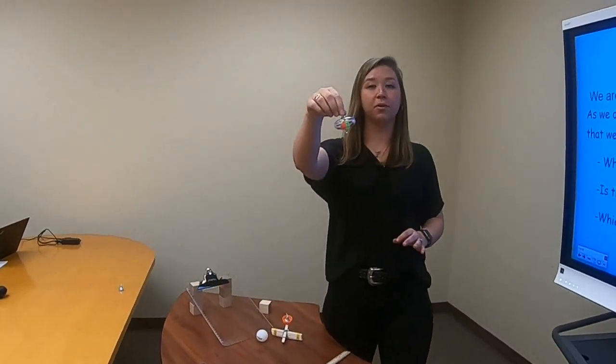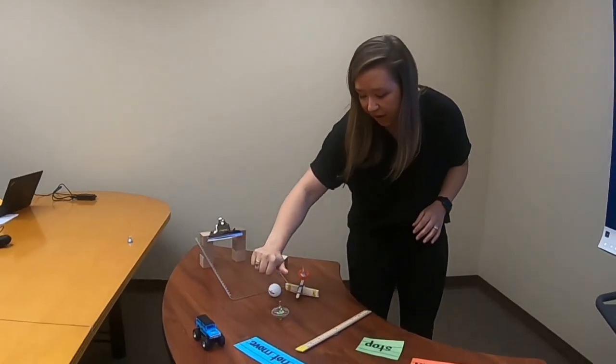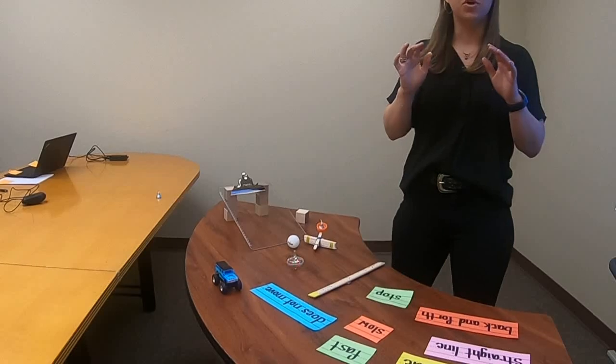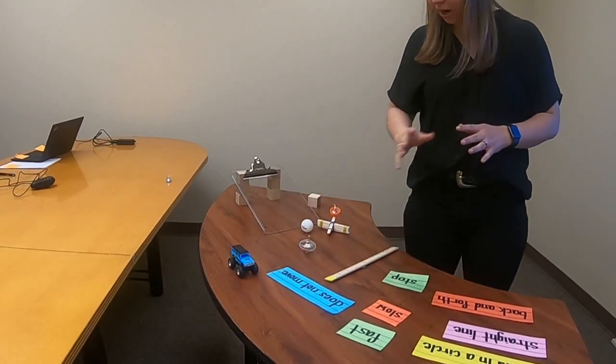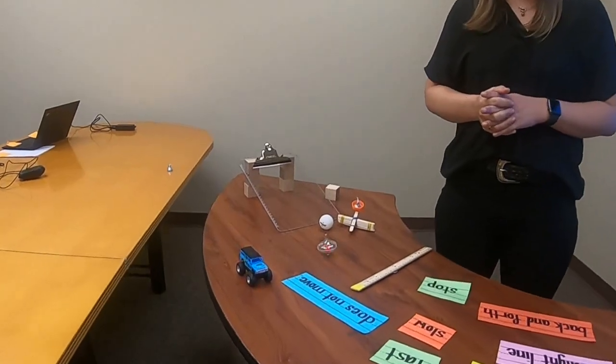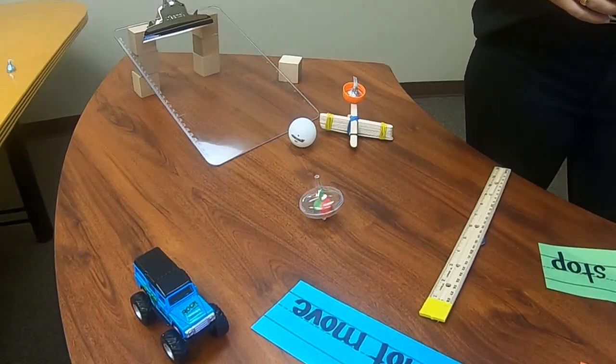Now I have a toy top right here. You might not have ever played with one of these before, but they're really fun. If I spin my toy top, it'll keep going and going and going. So how would you describe this motion of this toy top? Think it's a zigzag, a straight line? No, it spins around in a circle.